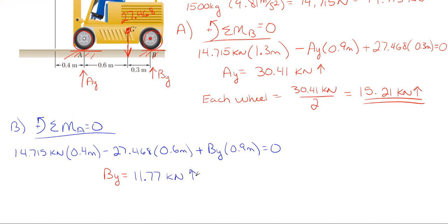So both wheels are in fact in contact with the ground. Once again, this is just for the total wheels at B, and it's asking for each wheel. So there are just two wheels back there, so you're going to take your By and divide it by two. So 11.77 kilonewtons over two gives us 5.89 kilonewtons in that upward direction for each wheel.